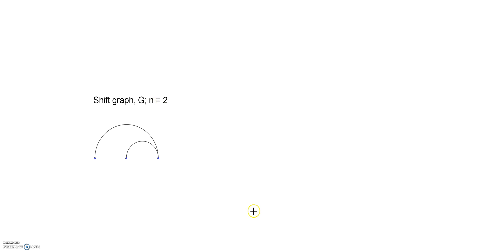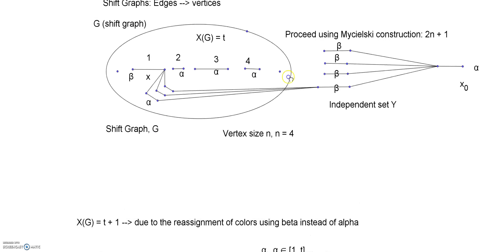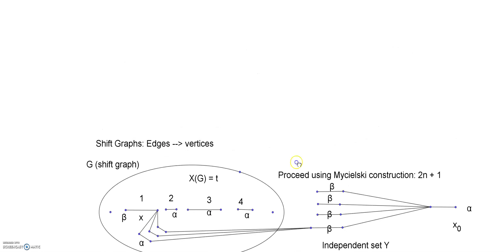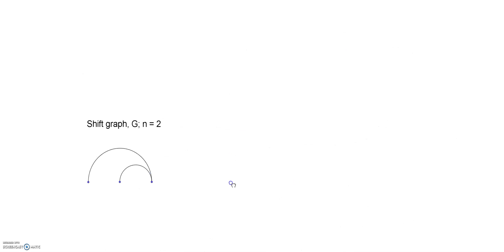If we recall the Mycielski construction, we have this additional point here that's adjacent to all the vertices in an independent set Y. And why do we have an independent set Y and this additional point? Well, we wanted to increase the vertex size from n to 2n plus 1. So right now I have n equals 2. I need to double it, so I'm going to lay down 2 to 3 points. The first step is to double it, and then to have this last point here to form all edges, with all of these being independent and then forming all these edges.